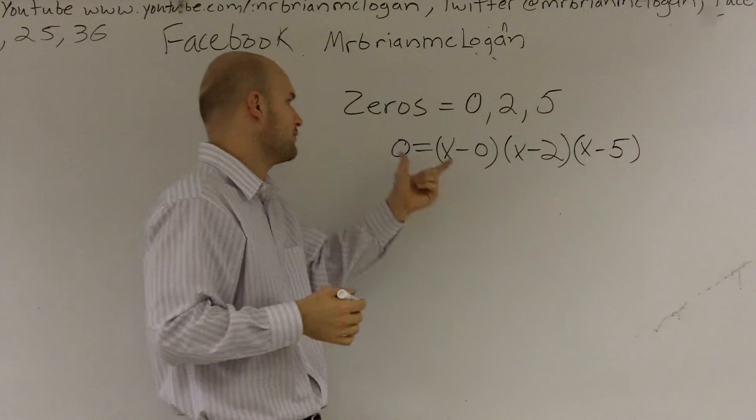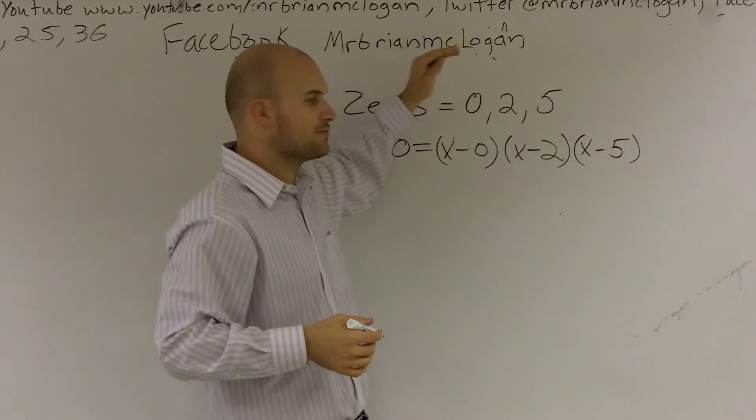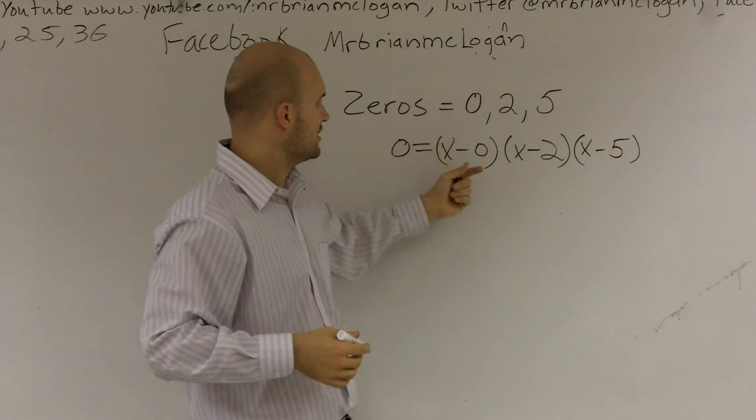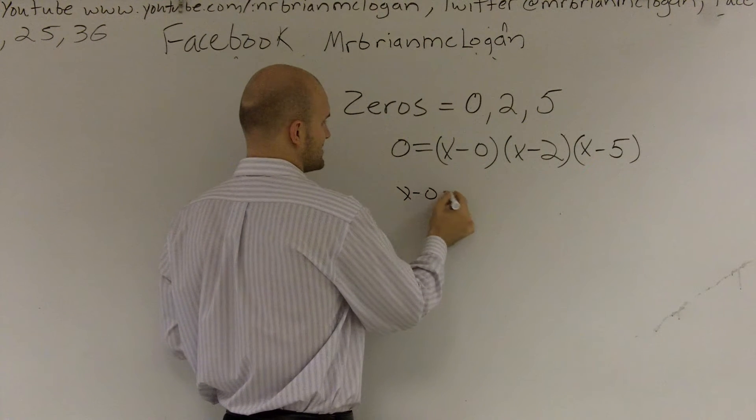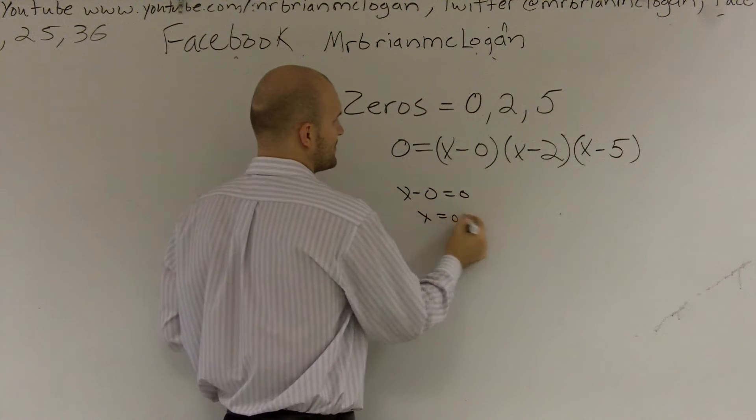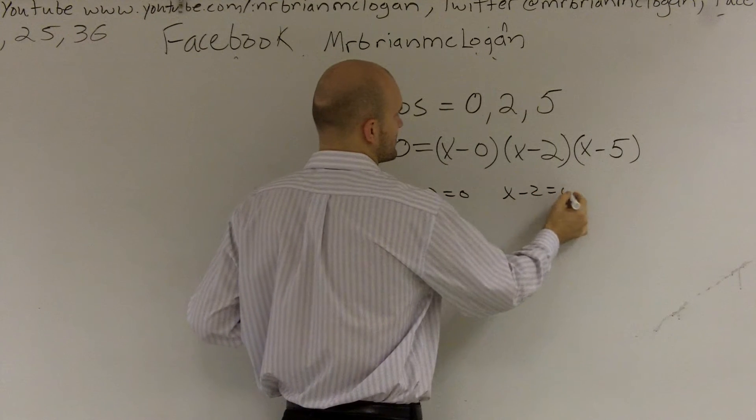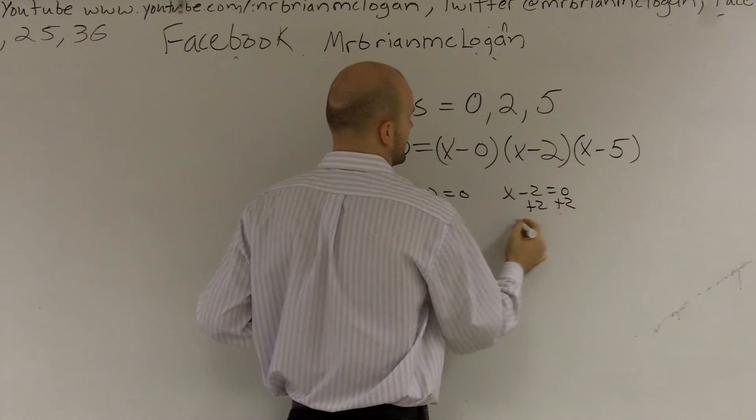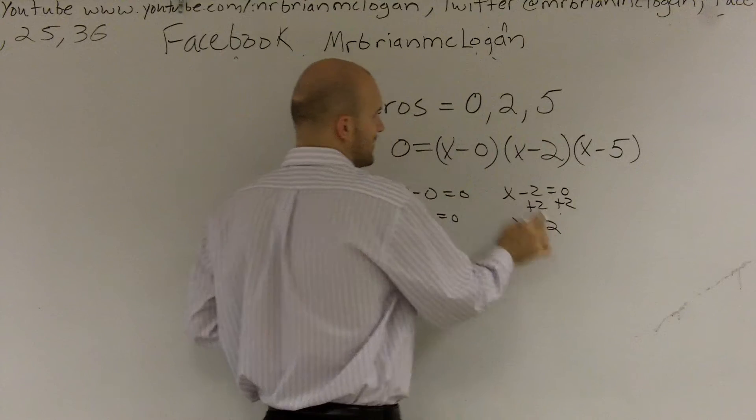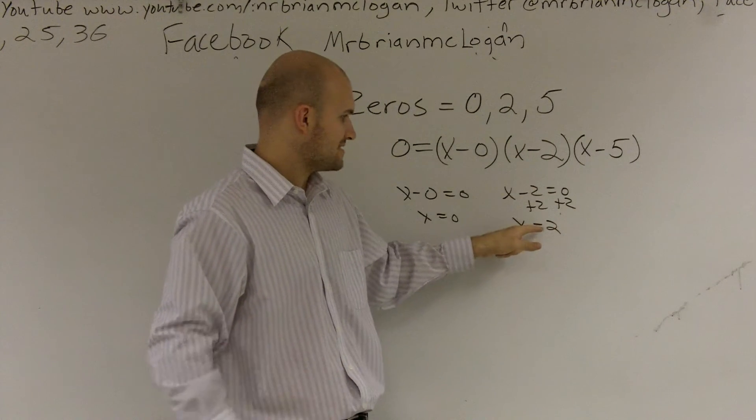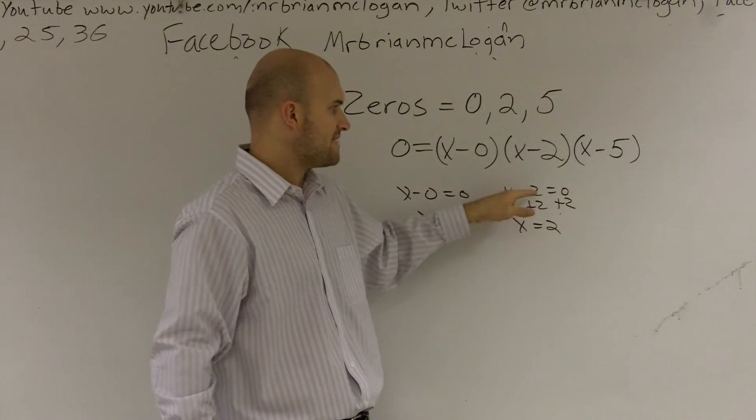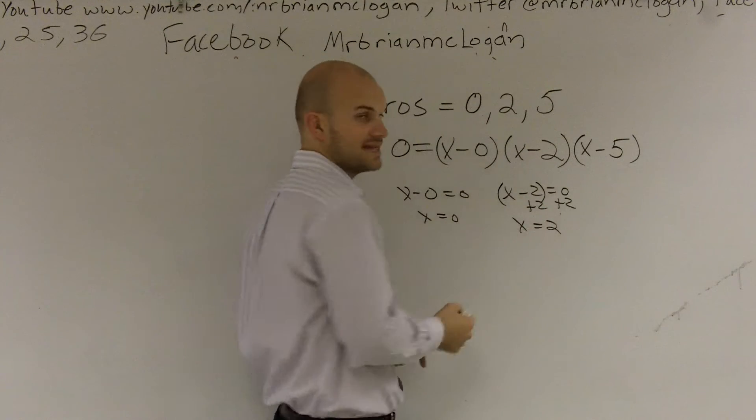Because remember, if we were taking a function and we were factoring it to find the zeros, once you get to this point, you say x minus 0 equals 0, so x equals 0. Then you say x minus 2 is equal to 0, so you add 2 and you get x equals 2. Well, that's where that 2 is, right? So what we're doing is we're going backwards. So if I say my zero is 2, the factor is x minus 2.